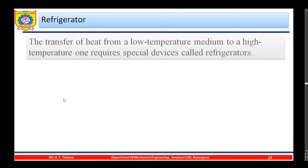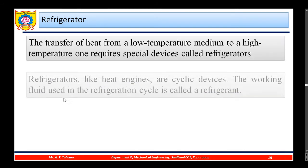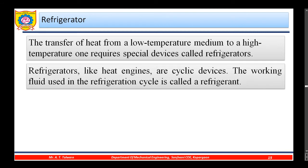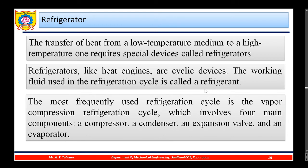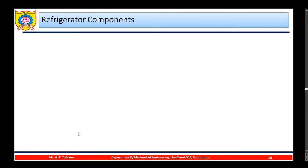Now, the refrigerator. The transfer of heat from a low temperature medium to a high temperature one requires special devices called refrigerators. Refrigerators, like heat engines, are cyclic devices. The working fluid used in the refrigeration cycle is called a refrigerant. The most frequently used refrigeration cycle is the vapor compression refrigeration cycle, which involves four main components: a compressor, a condenser, an expansion valve, and an evaporator.